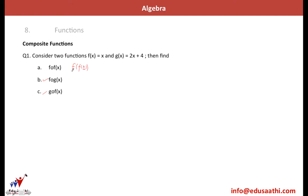Starting with the inner function: f(x) = x, so f(f(x)) = f(x) = x. For the second part, f(g(x)): g(x) with input x gives output 2x + 4 as per the formula. So the output of g(x) becomes the input for f. Since f(x) = x, f(2x + 4) = 2x + 4.